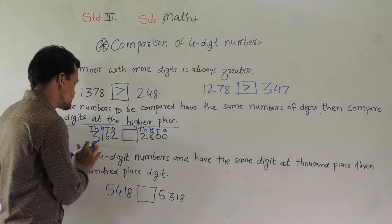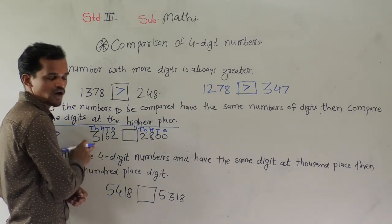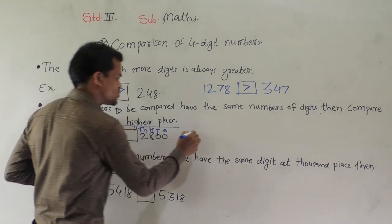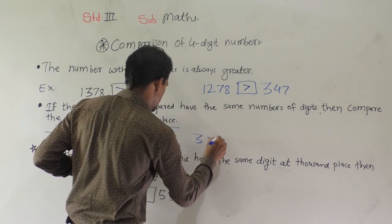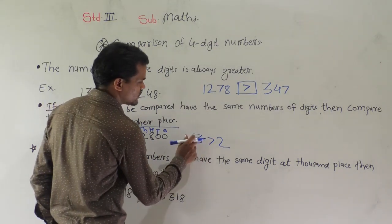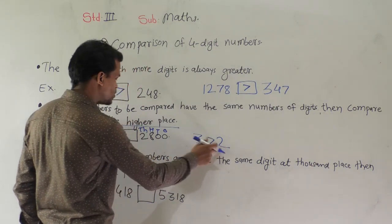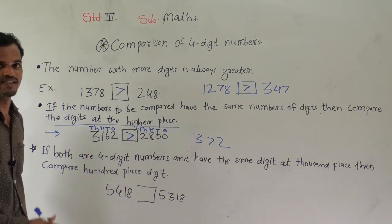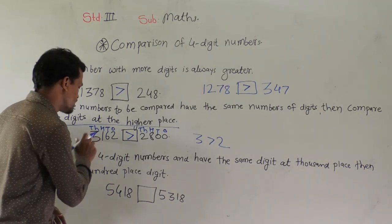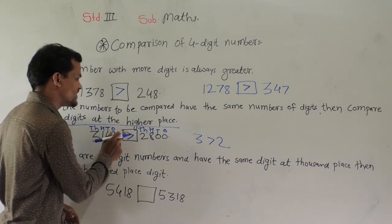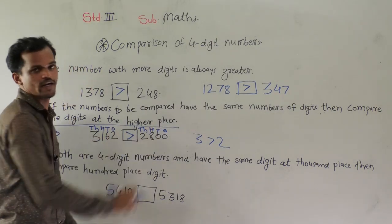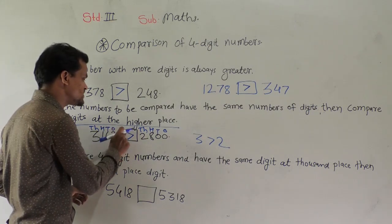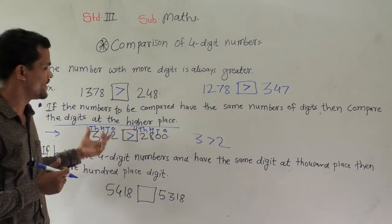Here 1 stands at the hundreds and thousands place. So we compare the thousands digit. In 3162, 3 is at the thousands place. In 2800, 2 is at the thousands place. So 3 is greater than 2. Means 3162 is greater than 2800. The open side of this sign should be at the greater number.